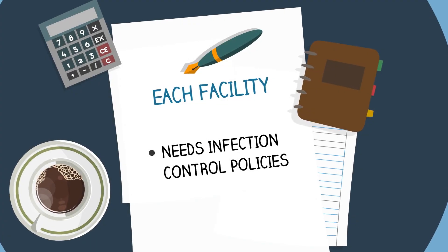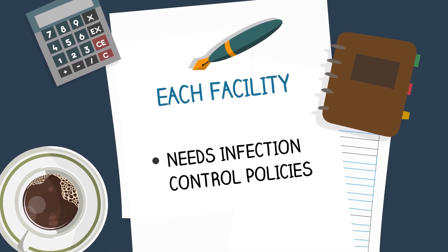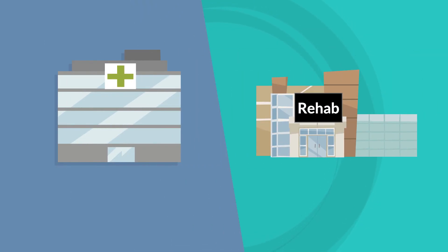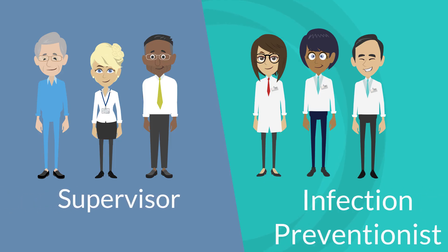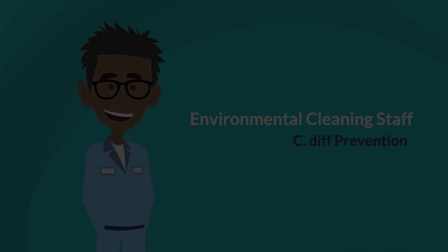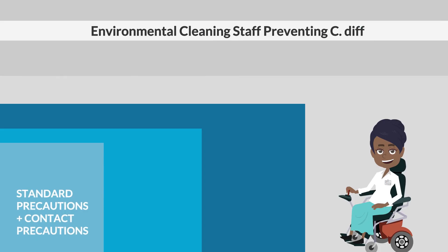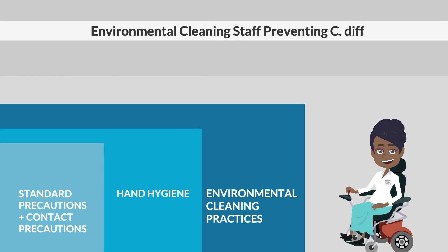Each facility should have a specific infection control policy they follow. Although infection control policies may differ between facilities, the best practice recommendations that are included here should apply to healthcare settings in general. If you have questions, be sure to ask your supervisor or infection preventionist. In this next section, let's look at the role environmental cleaning staff have in preventing the spread of C. diff spores, covering three sections: Standard Precautions and Contact Precautions, Hand Hygiene, and Environmental Cleaning Practices.